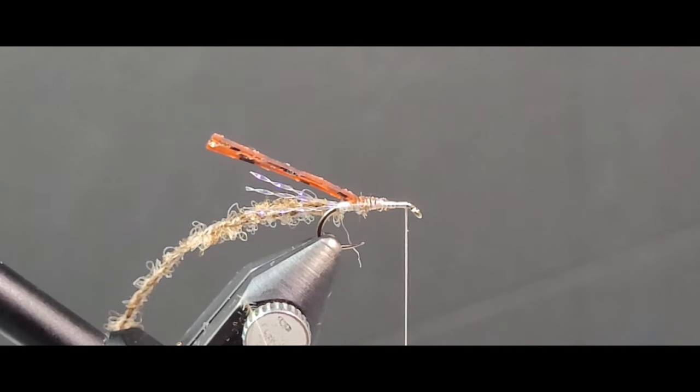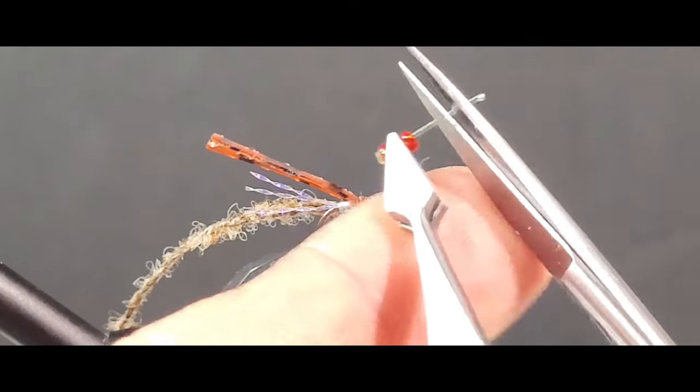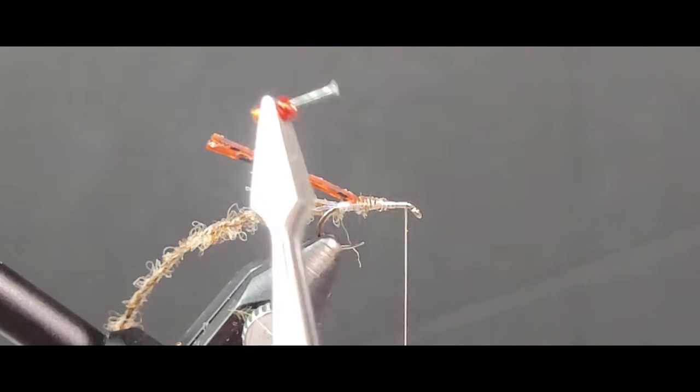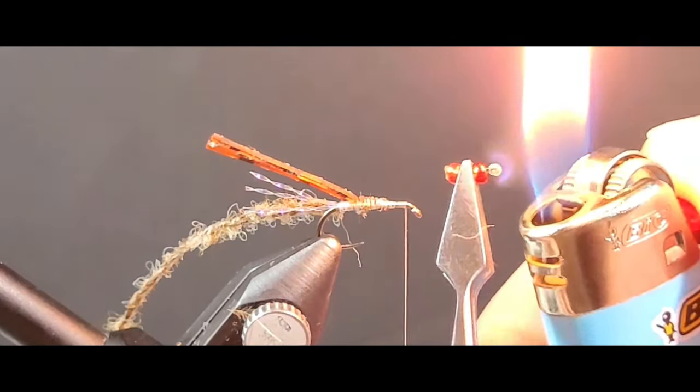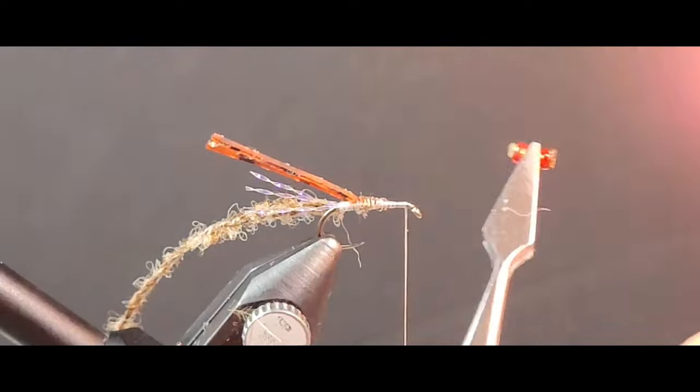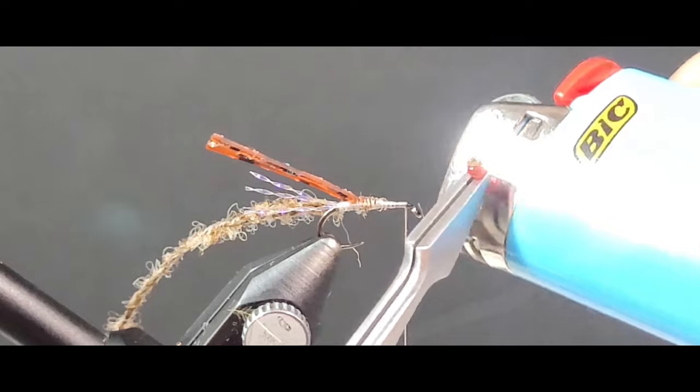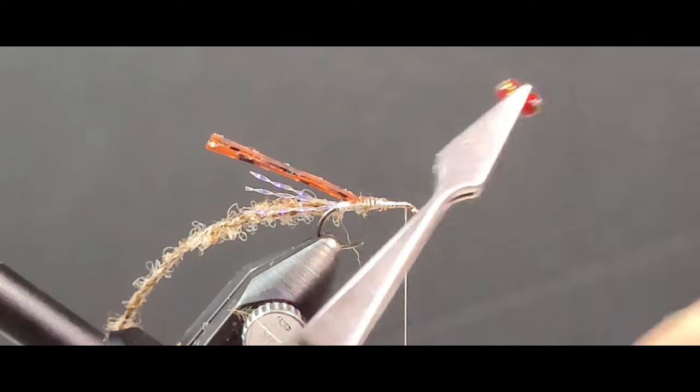I've gone ahead and added the poly yarn and the silly legs kind of midway up the hook shank. Now this is a cool little trick I want to show you guys: using a small section of monofilament, I've got 20 pound test. You just go ahead and melt the end and tap that down so it creates a little bit of a stop on either side of those glass beads.